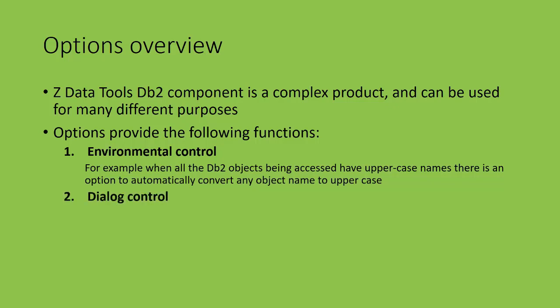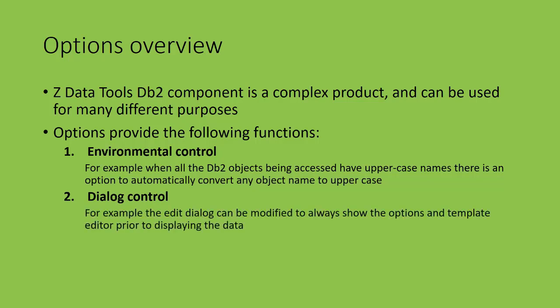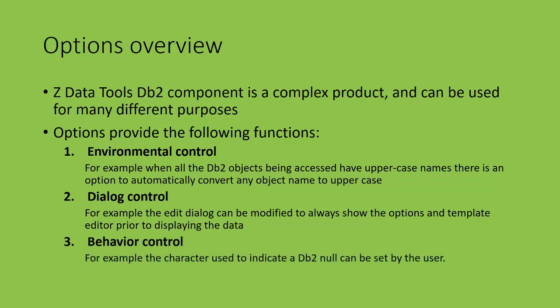Secondly, Dialog Control — some editor users always want to review the edit options in template prior to seeing the data, while others just want to see the data. There are options to support both. Finally, Behaviour Control — these options let you change, for example, which character is used to indicate a DB2 null.